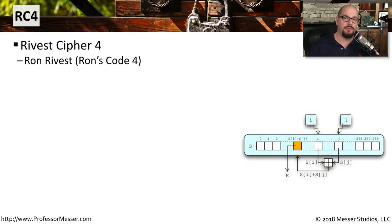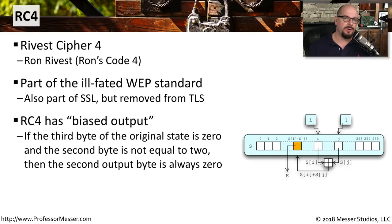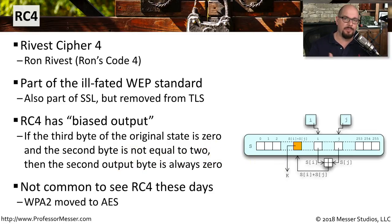Another legacy symmetric encryption algorithm is RC4, or Rivest Cipher 4, created by Ron Rivest. It was part of the original WEP standard, which is no longer in use in today's wireless networks, and it was also part of the SSL standard. When TLS replaced SSL, we also replaced RC4. One of the problems with RC4 is that it has a biased output — if the third byte of the original state is 0 and the second byte is not equal to 2, then the second output byte is always 0. This quirk caused RC4 to be deprecated.